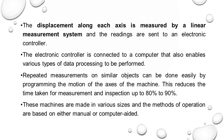CMMs with a least count of 0.01 micron are available now. When taking a measurement, it gives five decimal places in mm, e.g., 100.00000. This is complex calculation — that is why an electronic controller is connected to the computer, enabling various types of data processing to be performed.